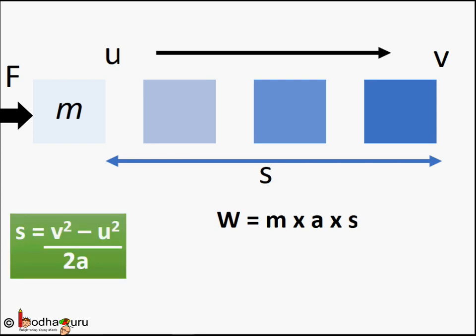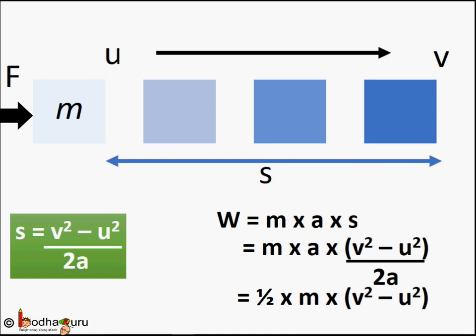Now we put the value of s, the displacement, that we got earlier. s = (v² - u²)/2a, and this comes from the third equation of motion.